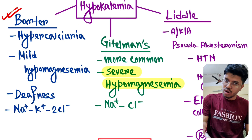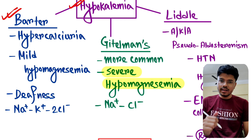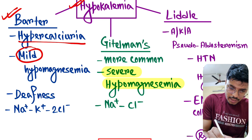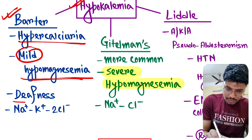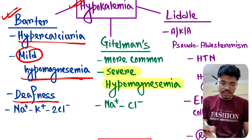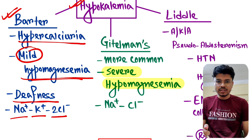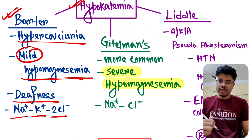Bartter syndrome: the common feature is hypokalemia. The additional feature is hypercalciuria, and there may be mild hypomagnesemia. There may also be deafness. The associated channel is Na+/K+/2Cl-. So in Bartter syndrome, there is hypokalemia, hypercalciuria, mild hypomagnesemia, deafness, and the associated channel is Na+/K+/2Cl-.